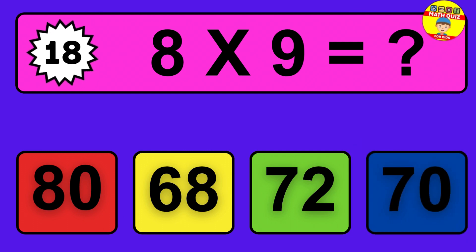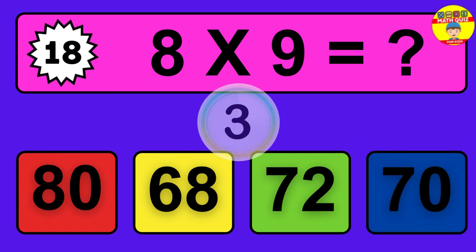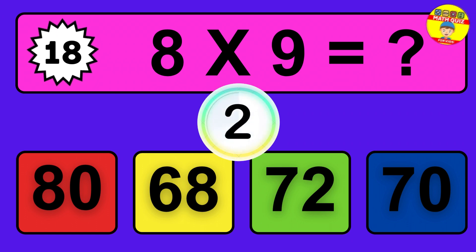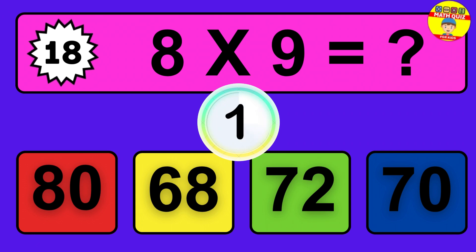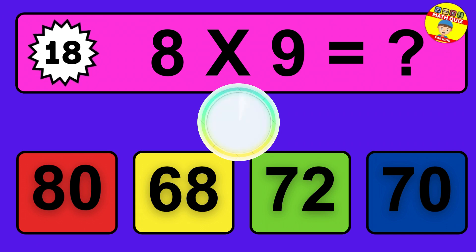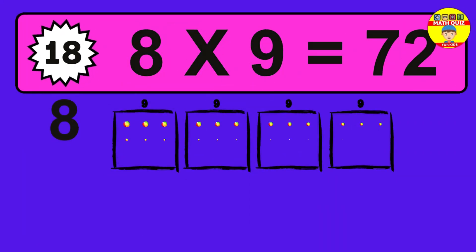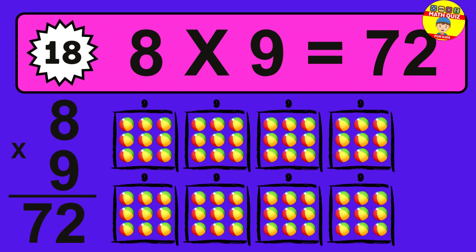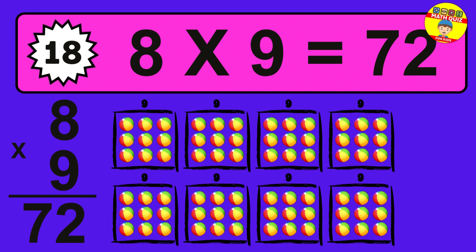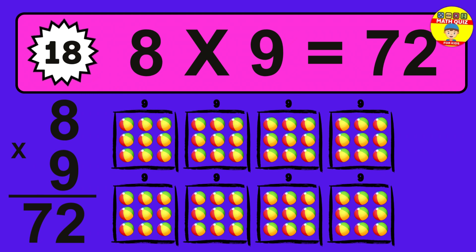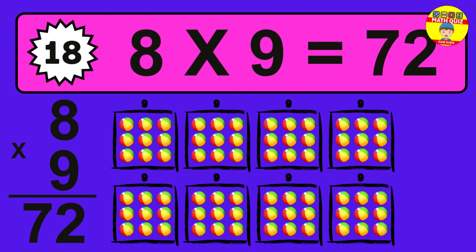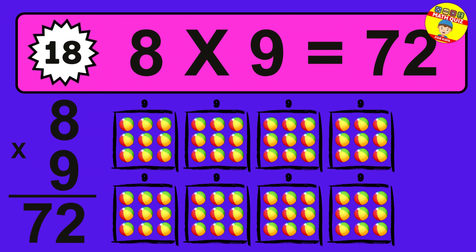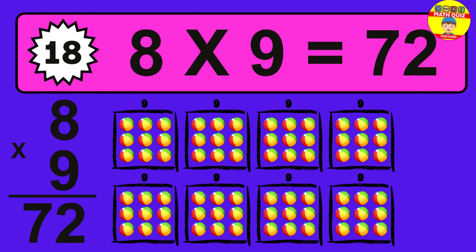Question 17. 8 times 9 equals what? The answer is 8 times 9 is 72. To calculate, we have 8 groups with 9 balls each one. So how many balls do we have? 72 balls.